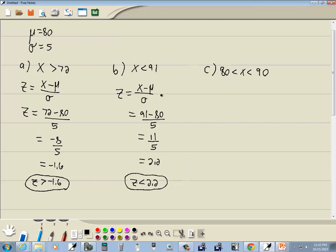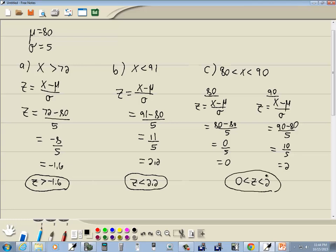Now for this one, we're going to have to do this formula twice. So for 80, and we'll also have to do it for 90. We've got z is equal to x minus mu over sigma. So we're going to have 80 minus 80 over 5, which is sigma. 80 minus 80 is 0, 0 divided by 5 is 0. Now for this one, we'll do the same thing. Plug it into x minus mu over sigma. So we're going to have 90 minus 80 over 5. 90 minus 80 is 10 over 5, which gives us 2. So the 80 is less than x is less than 90 becomes 0 is less than z is less than 2. And those would be our answers.